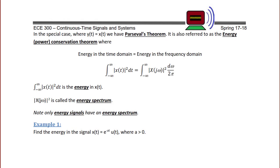In the special case where y(t) = x(t), we have Parseval's theorem. It is also referred to as the energy or power conservation theorem, where energy in the time domain equals energy in the frequency domain: the integral from minus infinity to infinity of |x(t)|² dt equals the integral from negative infinity to infinity of |X(jω)|² dω over 2π. Note that the left-hand integral is the energy in x(t), and |X(jω)|² is called the energy spectrum. Only energy signals have an energy spectrum.